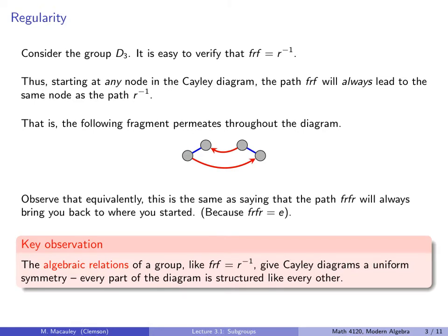So here's a key observation. The algebraic relations of a group give Cayley diagrams a uniform symmetry. Every part of the diagram is structured like every other.